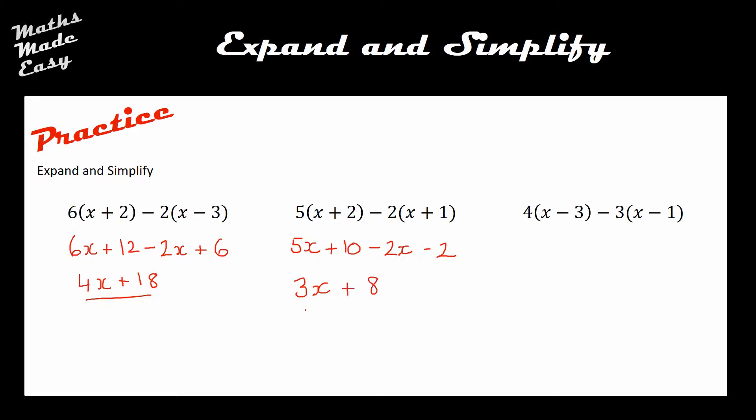In the final one, 4 times x is 4x, 4 times negative 3 is negative 12. Moving on to the second bracket, negative 3 times x is negative 3x, and negative 3 times negative 1 is positive 3. I've got 4x's take away 3x's which is just 1x left over, and I've got minus 12 plus 3 which is negative 9, so this simplifies down to x minus 9.